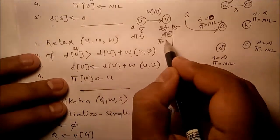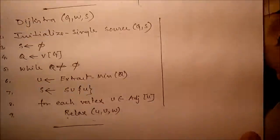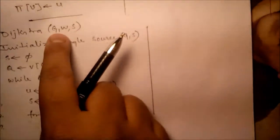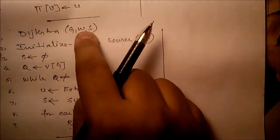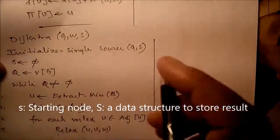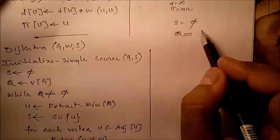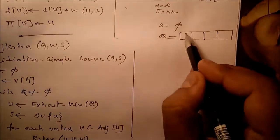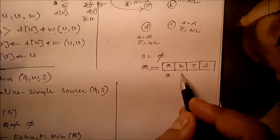The parent π[v] will be updated to u. The function receives the graph with weights G(V, E). After initialization, S = φ and Q stores all vertices: a, b, c, d. Only a has d = 0; remaining vertices have d = infinite.